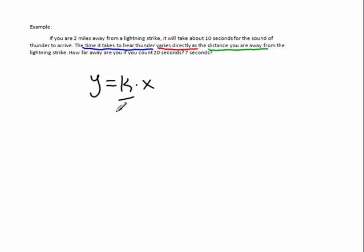So now we need to solve for k so that we can answer these other questions here. Now, we have information: we are 2 miles away from the lightning strike, and it takes about 10 seconds for that to arrive. So, in this instance, y is going to be our distance, and x is our time.